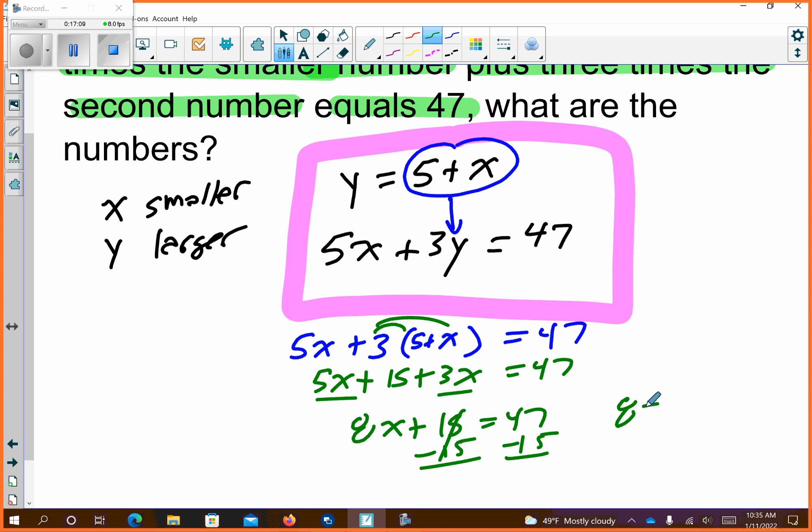Subtract 15. So 8x is equal to, I think, is it 32? Did I do that math right? Yeah. Oh, that works even better because 8 goes into 32. How many times does 8 go into 32? Four times. So four is which number? X is what number? It's my smaller number. Okay, how do I get my larger number?